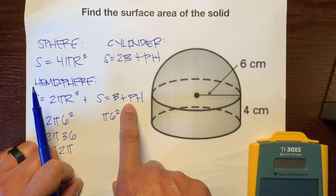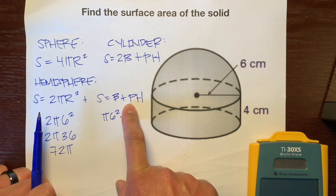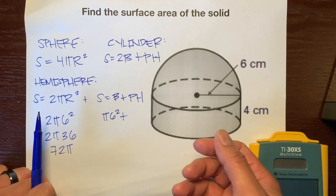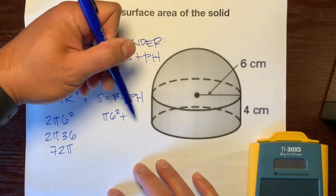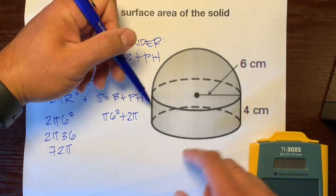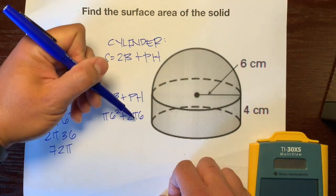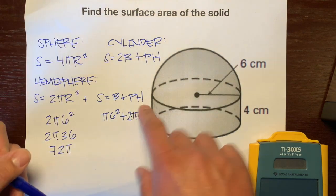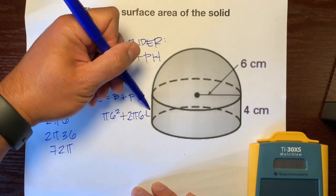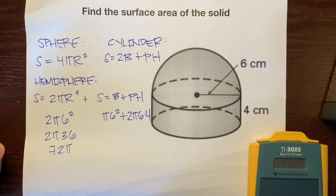We'll write 6² plus, now we want to get this lateral area around the cylinder. P is base perimeter. Another word for perimeter of a circle is circumference. If you remember the formula for circumference, it's 2πr. So, I'll write 2π. And the radius is 6. And H is the distance between these two bases, which is 4.